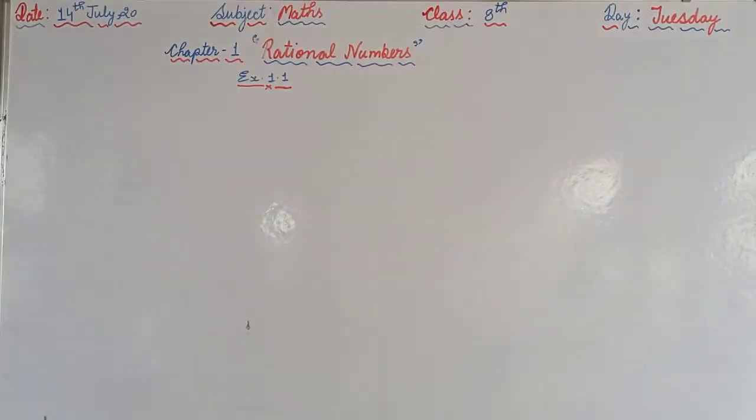Today we will discuss problem 6. Problem 6 is: multiply 6 upon 13 by the reciprocal of minus 7 upon 16.